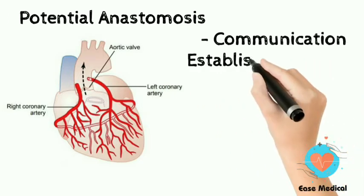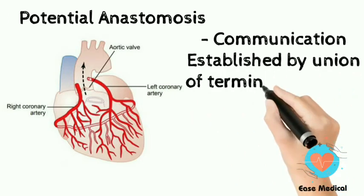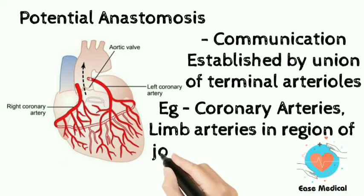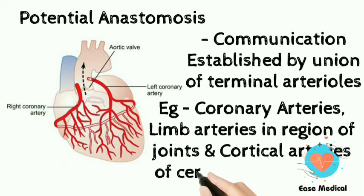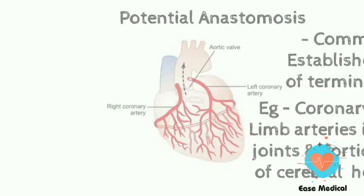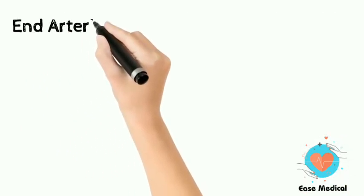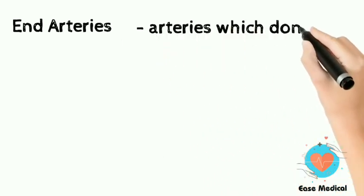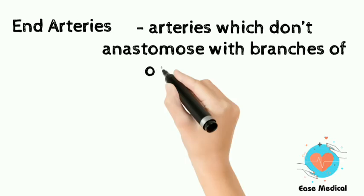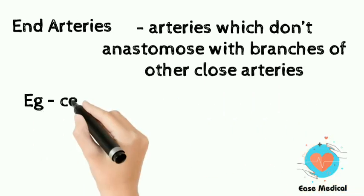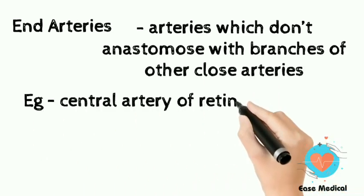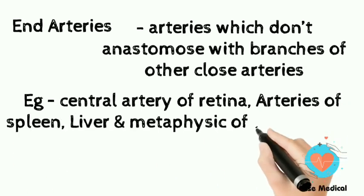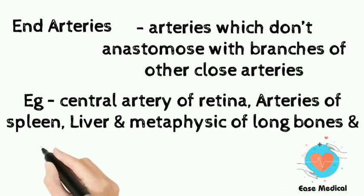Examples of potential anastomosis include coronary arteries, limb arteries in the region of joints, and cortical arteries of the cerebral hemisphere. End arteries are arteries which don't anastomose with branches of other close arteries; examples include the central artery of the retina, arteries of the spleen, liver, metaphysis of long bones, and central branches of cerebral arteries.